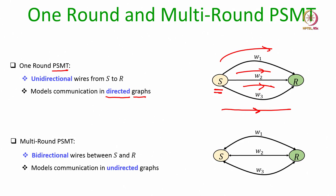When we talk about a multi round PSMT protocol, we assume that the communication channels between the sender and the receiver are bidirectional — the sender can send information to the receiver, then the receiver can send feedback, and then again the sender can communicate, and so on. This interaction in both directions is possible and it models communications in undirected graphs where there is no direction associated with the underlying links.